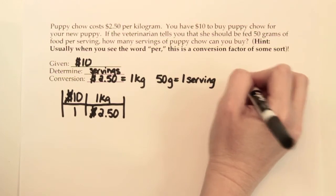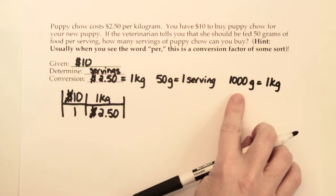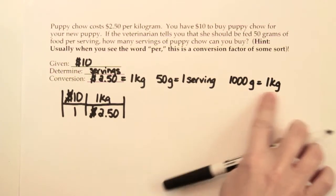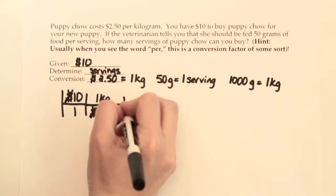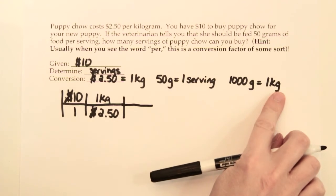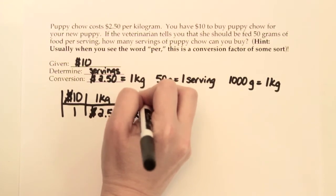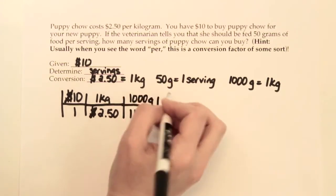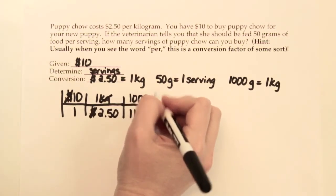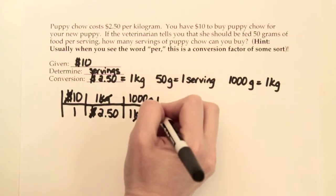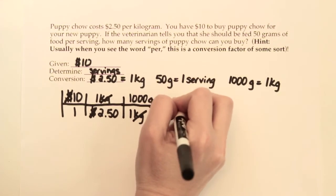A conversion factor you'll want to know is that there are 1,000 grams in a kilogram — you're going to use that one a lot this year. So we can link these together. We want our kilograms to cancel out, so I'll take the kilograms part of that conversion factor and put it on the bottom, and 1,000 grams goes up at the top. That gets us closer to servings because kilograms cancel. Now I'm at grams and I need to get to servings, so I'll put the 50 grams on the bottom and one serving up on top.